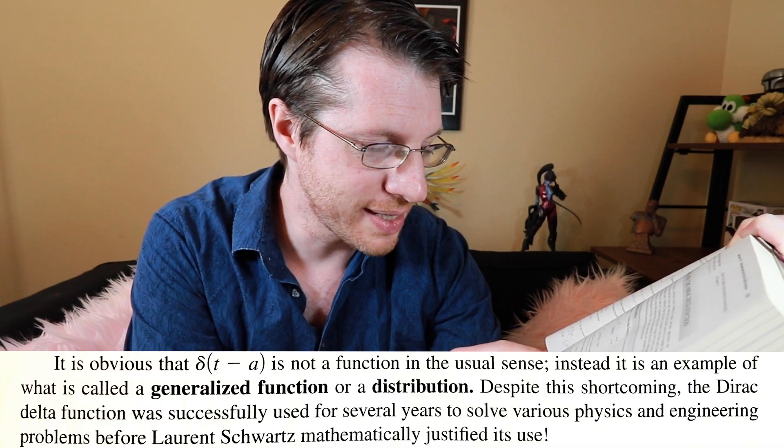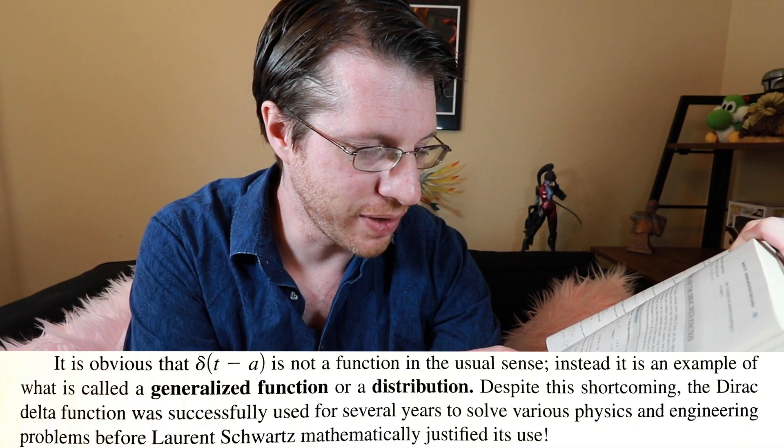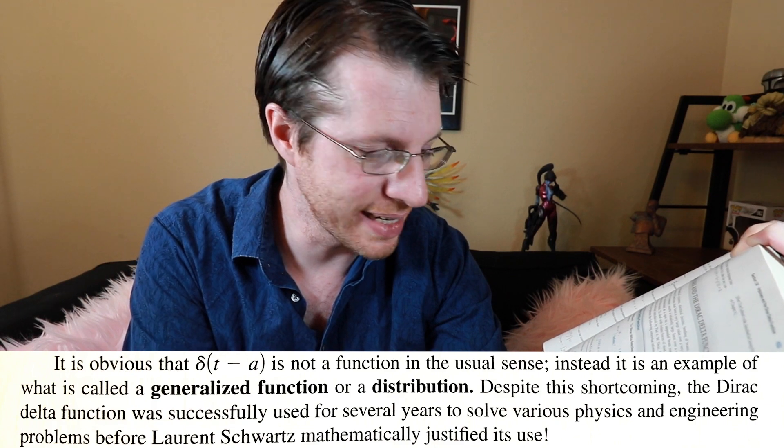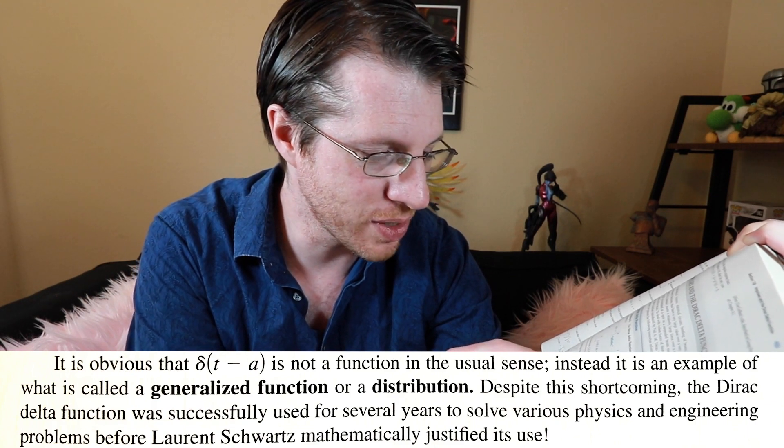If you take a look at the earliest place that a delta function appears — I think that's in chapter seven — it is obvious that the delta function is not a function in the usual sense, and instead is an example of what is called a distribution. Nagle, Saff, and Snyder state that the delta function is not a function. And these are some pretty smart guys. So who the hell am I to say that the delta function is actually a function?